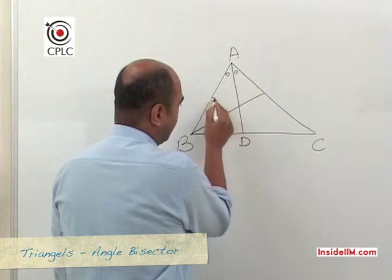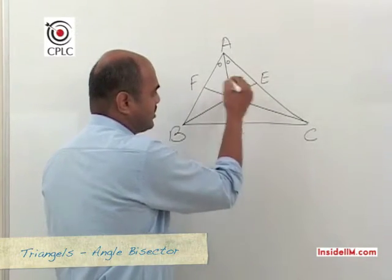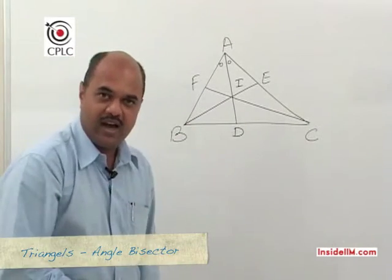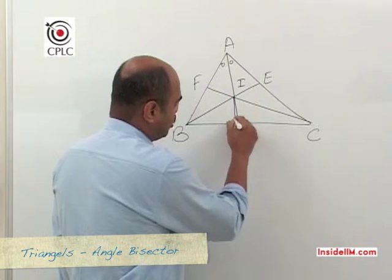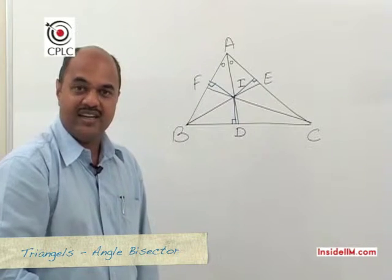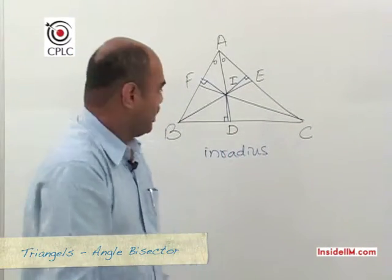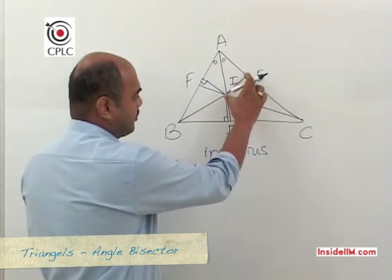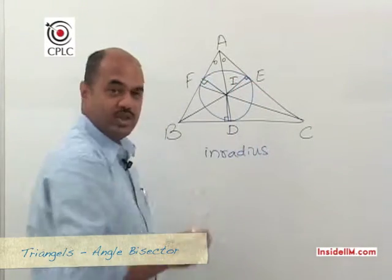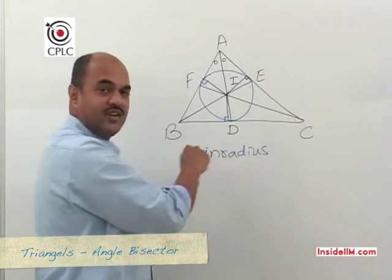If we draw all three angle bisectors, they meet at one common point known as the incenter, denoted I. From I, if we draw a perpendicular to each side of the triangle, the three perpendicular distances are equal — this is called the inradius. Using I as center and the inradius as radius, we draw a circle inside the triangle touching all three sides, called the incircle.